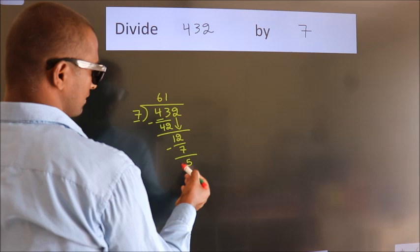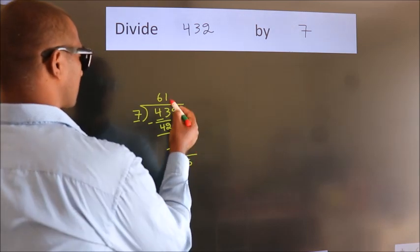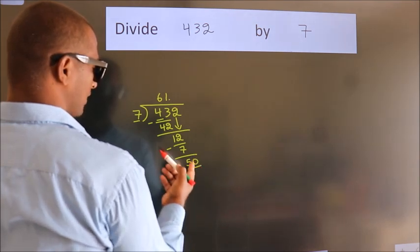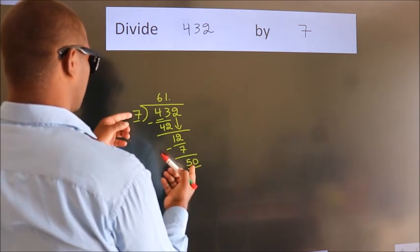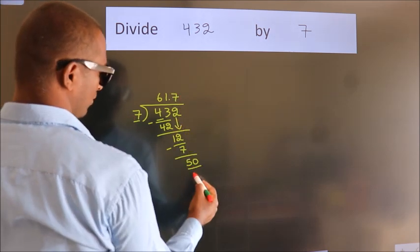After this, no more numbers to bring down. So what we do is, we put a dot and take 0. So 50. A number close to 50 in the 7 table is 7 times 7, which is 49.